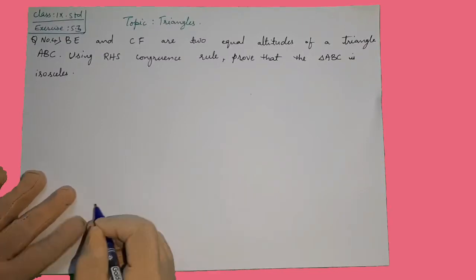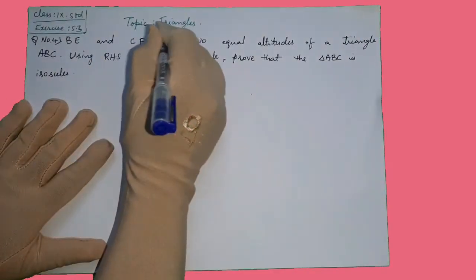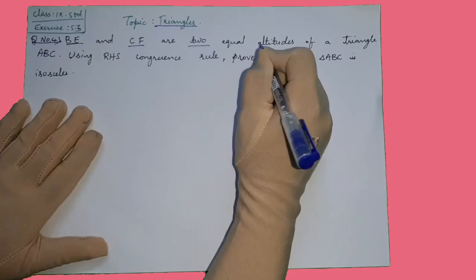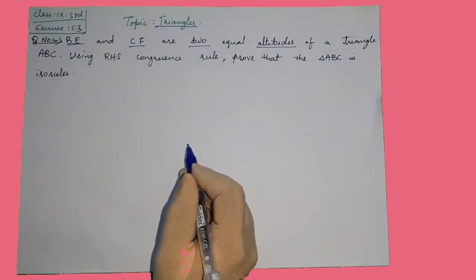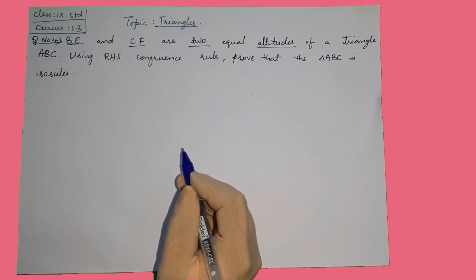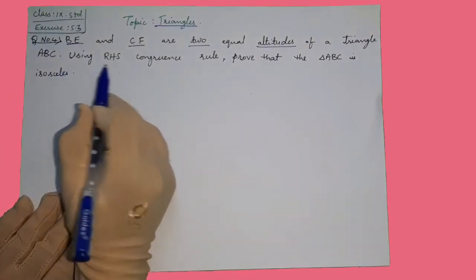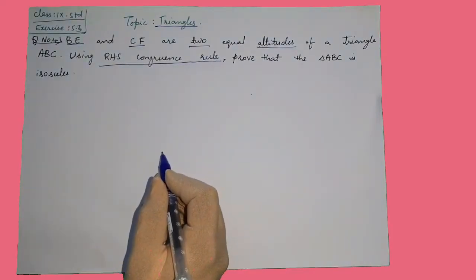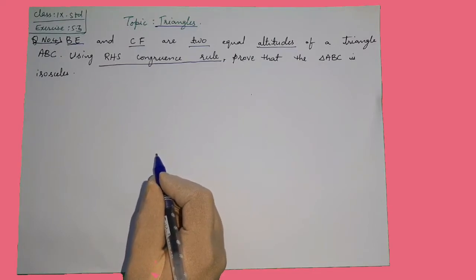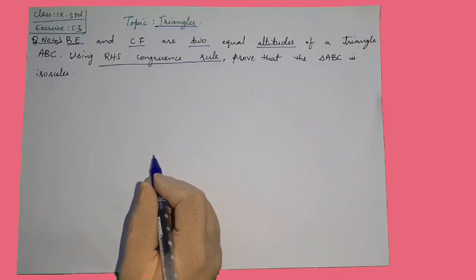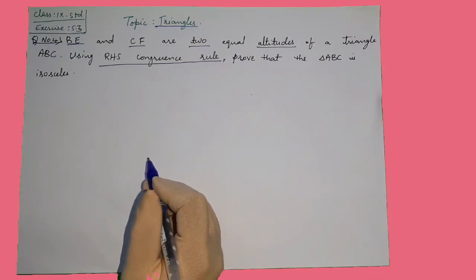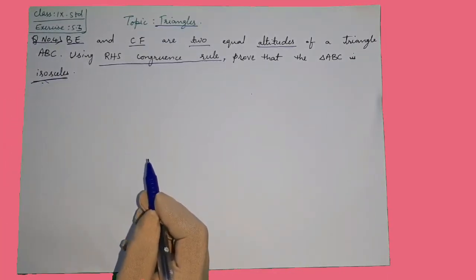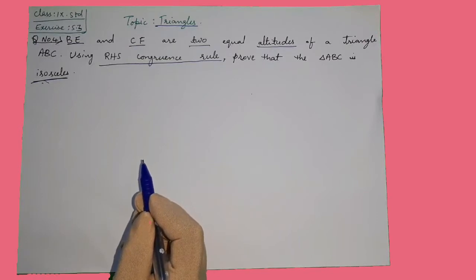Hello everyone. Now the triangles exercise 5.3, question number 4. BE and CF are two equal altitudes of triangle ABC. Altitude means height of the triangle. You have to use the RHS congruence rule in this particular question. We have five congruence rules in total. Prove that triangle ABC is isosceles — meaning that the two sides are equal.